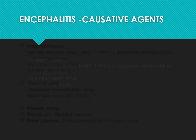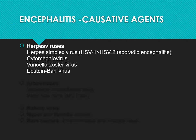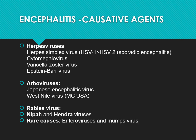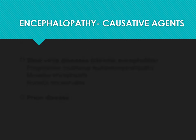The causative agents for encephalitis include the herpes family — herpes simplex virus 1 (HSV-1) is more involved and is one of the most common causes of sporadic encephalitis. This is an important MCQ point: HSV-1 is the most common cause of sporadic encephalitis. Then cytomegalovirus, varicella zoster, Epstein-Barr virus. Among the arboviruses, there is a large list — these are viruses transmitted by arthropod vectors. Japanese encephalitis is the most common epidemic encephalitis in India, whereas in the US it is the West Nile virus. Then rabies virus, Nipah, and Hendra virus. Rare causes may include enteroviruses and mumps virus.